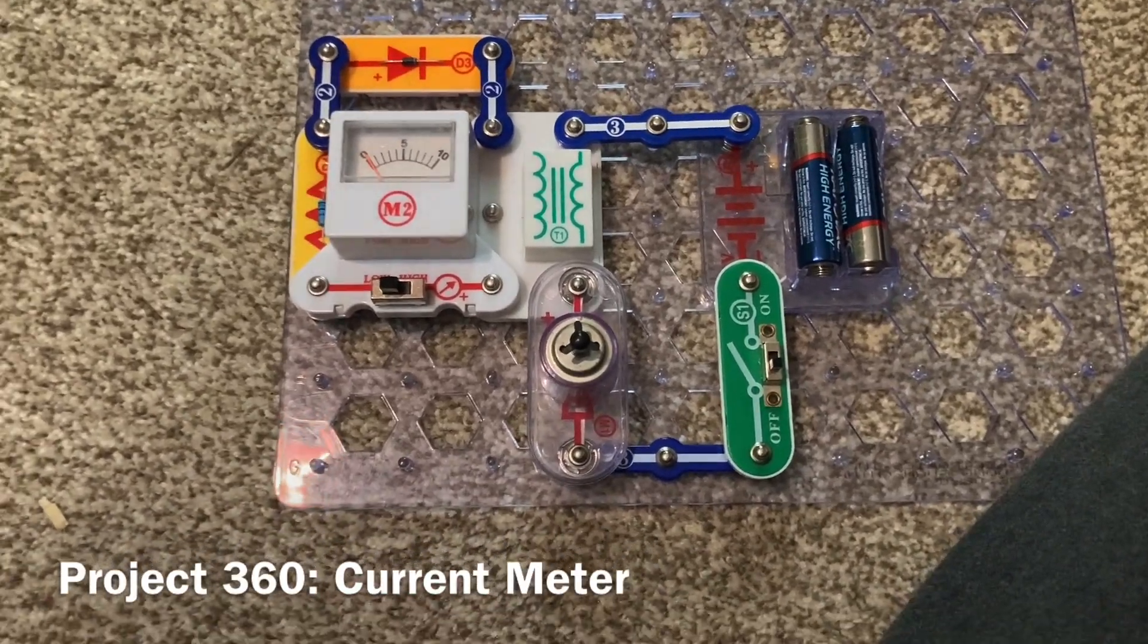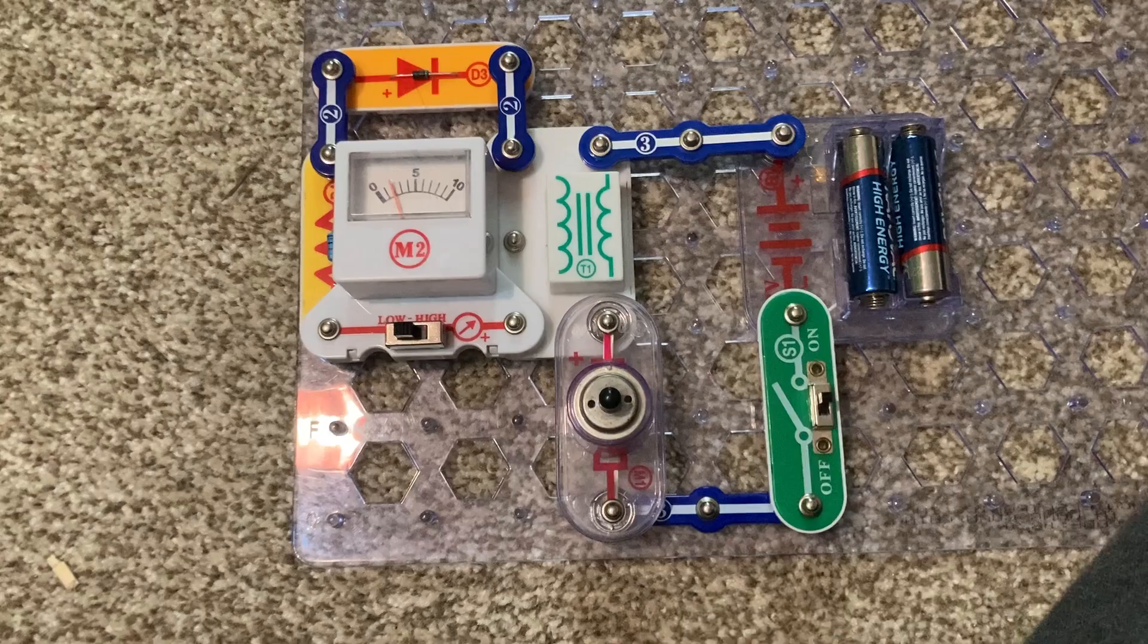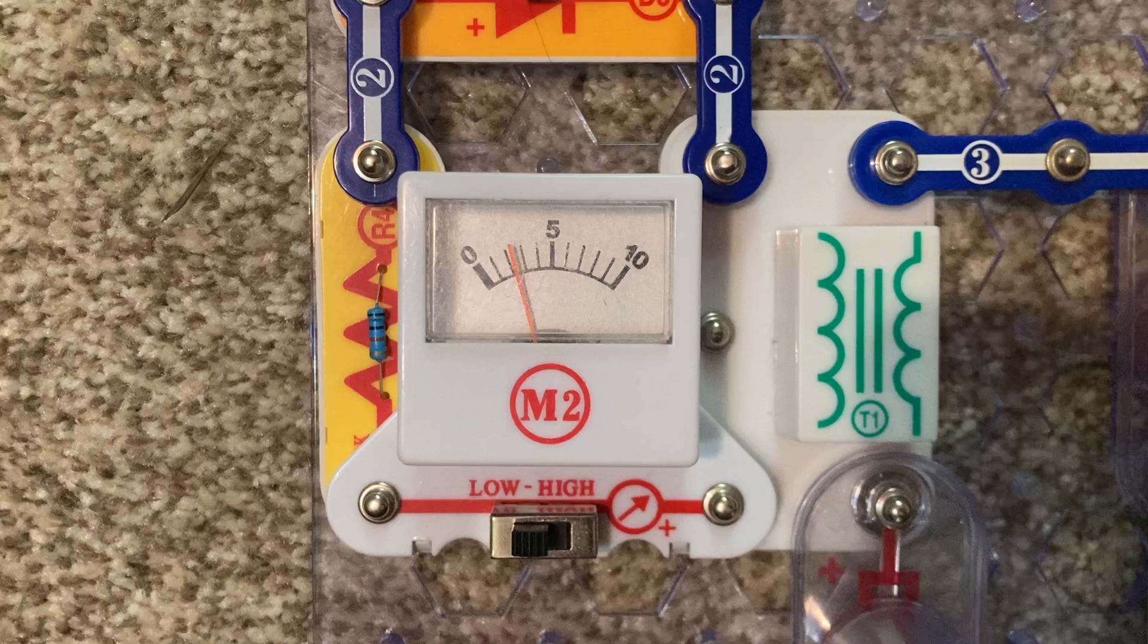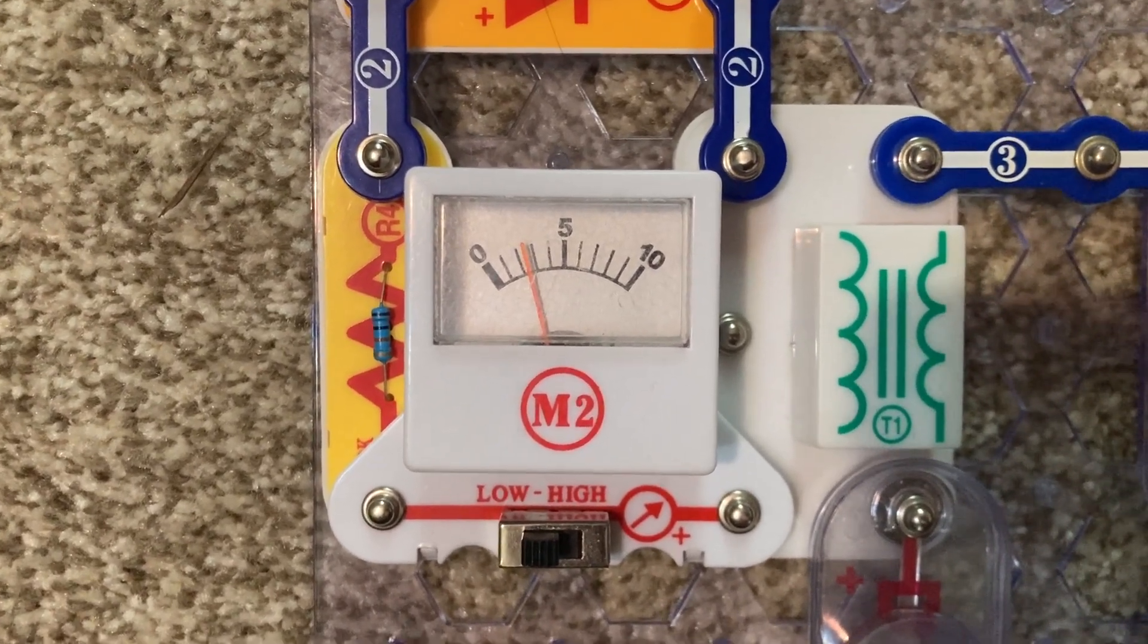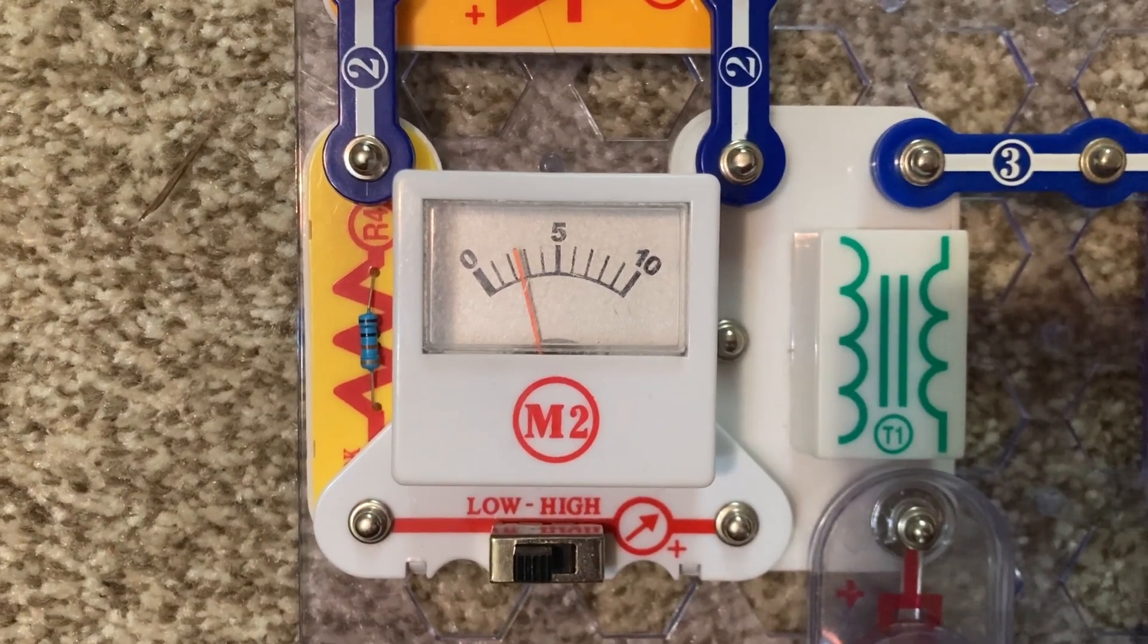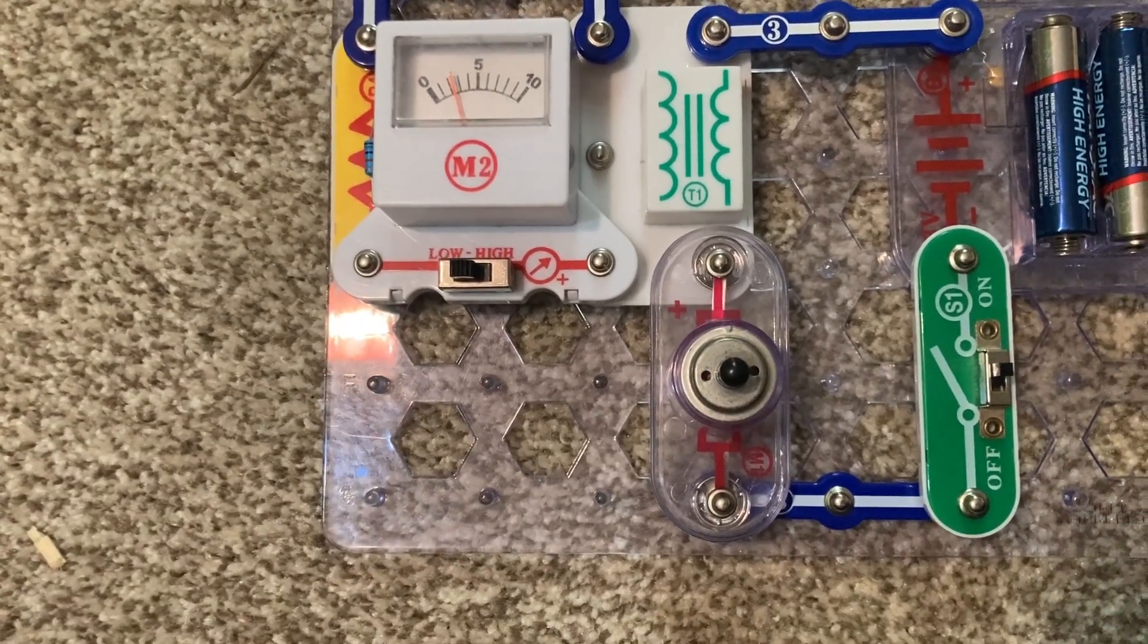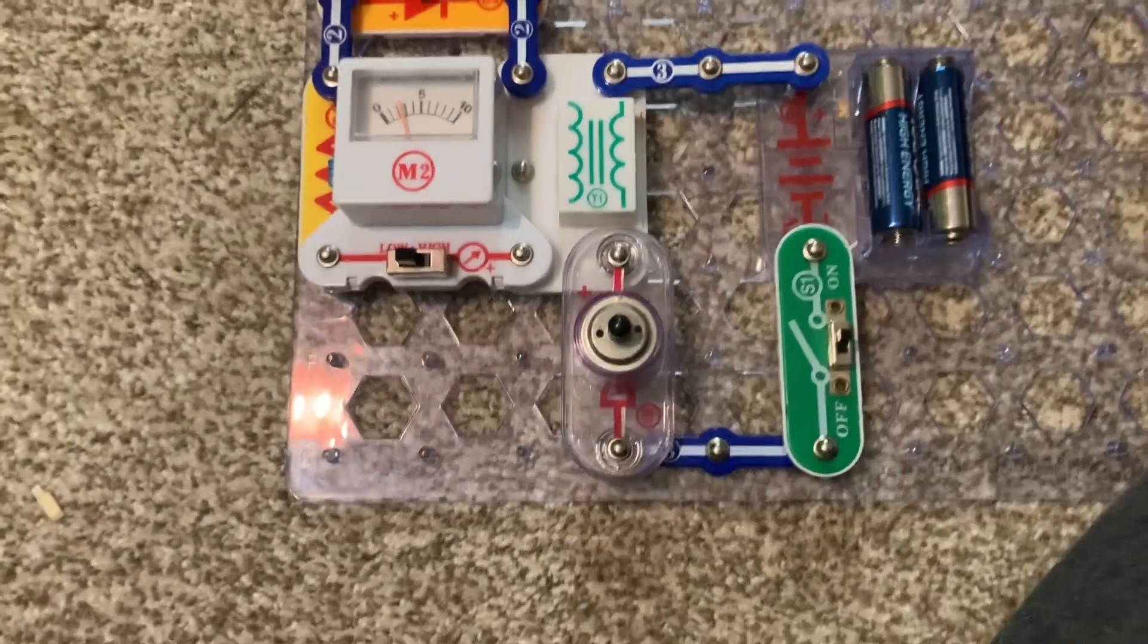This circuit enables you to measure current instead of voltage. When I turn on the slide switch, the motor spins and you can see how much current is flowing by looking at the meter. It's close to three milliamps right now. And the current on the right side of the transformer creates a current on the left side using magnetism.